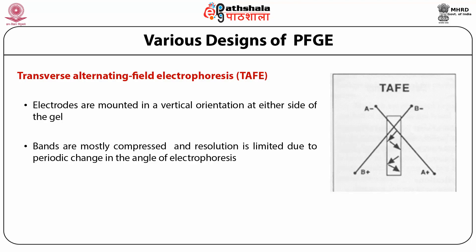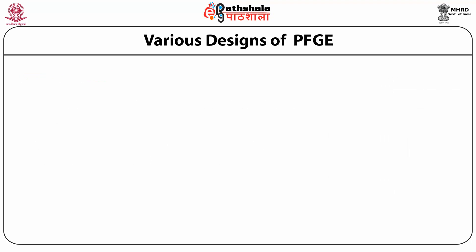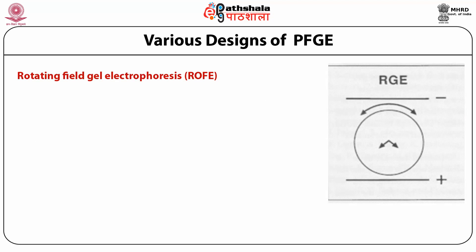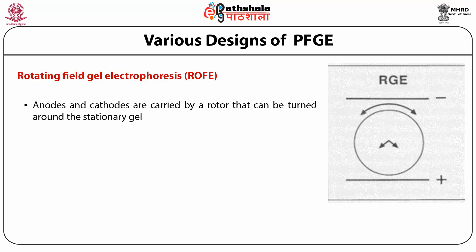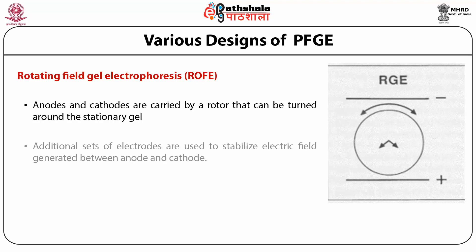Another variant is Rotating Field Gel Electrophoresis (ROFE). In this method, anodes and cathodes are carried by a rotor that can be turned around the stationary gel, so the electric field is constantly rotated. This requires an additional set of electrodes to stabilize the overall electric field generated between anode and cathode.